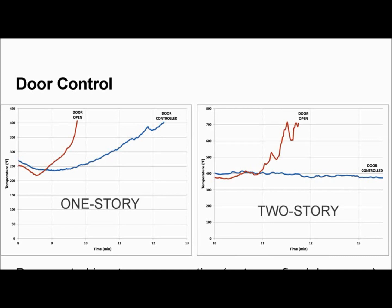In the two-story, the fire is in the back of the house, so the door is further from the fire — it's a longer flow path for the air to travel. With door controlled, we thought the fire was going to go out. Versus wide open, we hit 400 degrees in about 12 minutes. With the door controlled, we actually had to open it all the way to continue growing the fire so we could complete the vertical ventilation piece of the test.